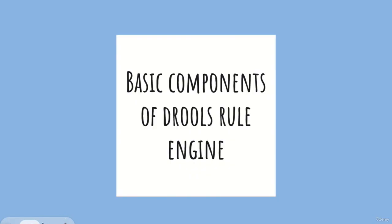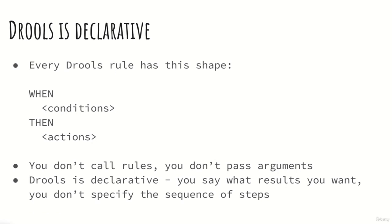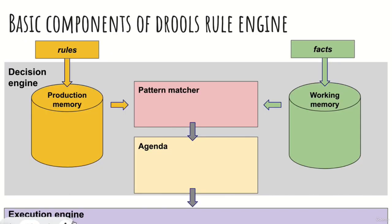First, we're going to get to know the memory areas and different components of the rules decision manager. Rules is declarative — we have the 'when' part called the left-hand side of the rule with conditions, and the 'then' part called the right-hand side with actions. You don't call rules, you don't pass arguments — they are not methods. Like SQL, which is also declarative: you say what you want returned, not how to get it. The same is true with rules.